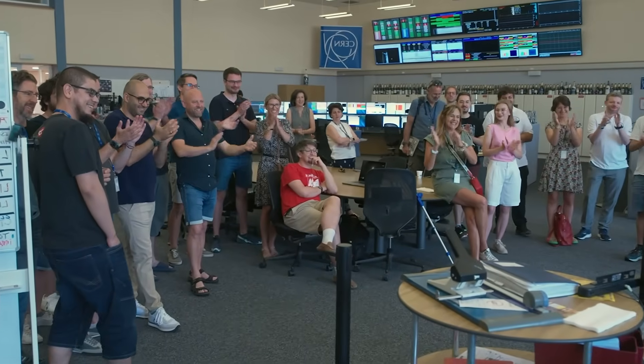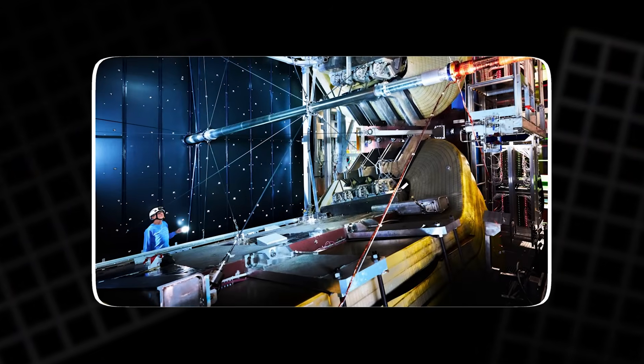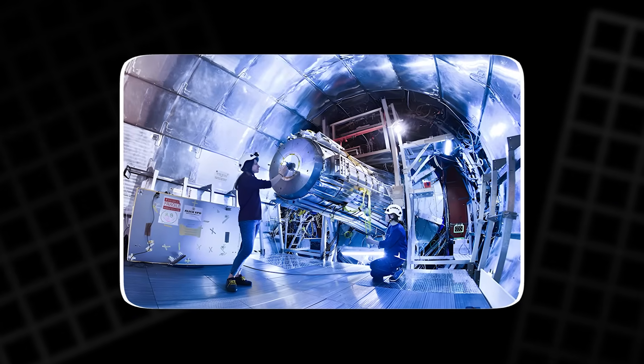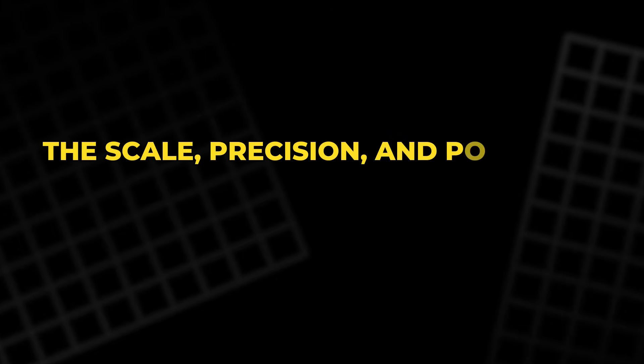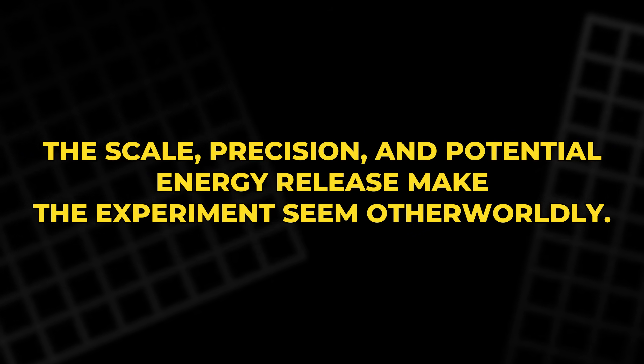In 2012, CERN trapped anti-hydrogen atoms for 1,000 seconds, setting a record at that time, edging closer to a detailed antimatter study. Even though containment is extremely secure, the very idea of antimatter experiments at CERN evokes a forbidden-feeling aura. The scale, precision and potential energy release make the experiment seem otherworldly.